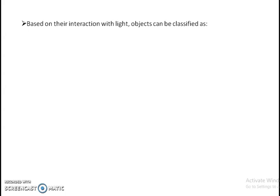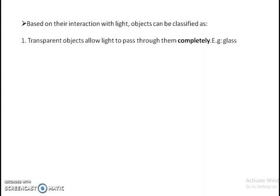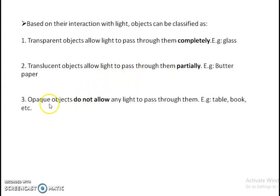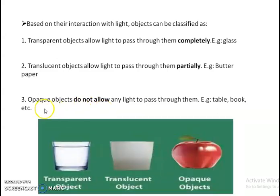Based on the interaction of light with an object, we classify them into three types. The first is the transparent object — transparent objects allow the light to pass through them completely. An example is glass. The second is called a translucent object, through which light passes only partially. If you apply oil on a paper or use butter paper, you can see some diffuse light coming through it but it is not very clear. The third object is the opaque object, which does not allow any light to pass through them — for example, a table or a book.